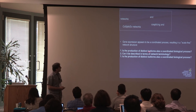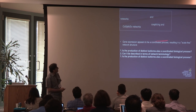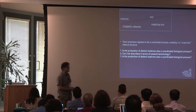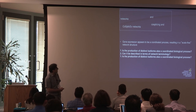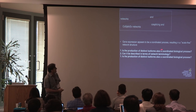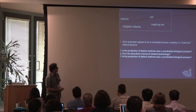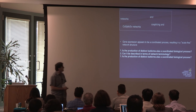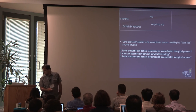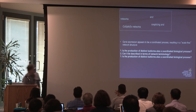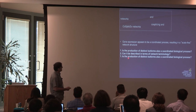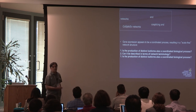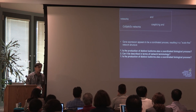We know from Steve's work that gene expression appears to be a coordinated process resulting in a scale-free network structure. The questions I want to address today are: Is the production of distinct isoforms also a coordinated biological process? And can we describe this process using network terminology? Can we describe coordinated isoform production using network terminology?